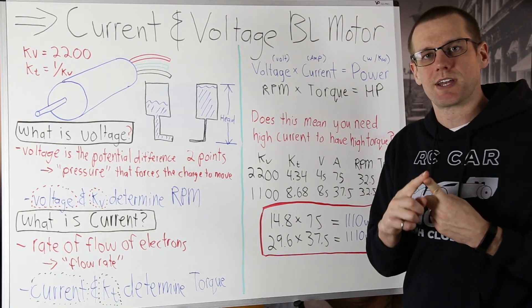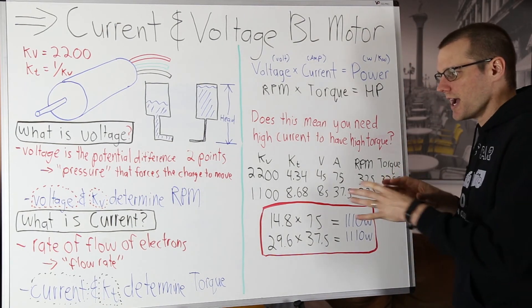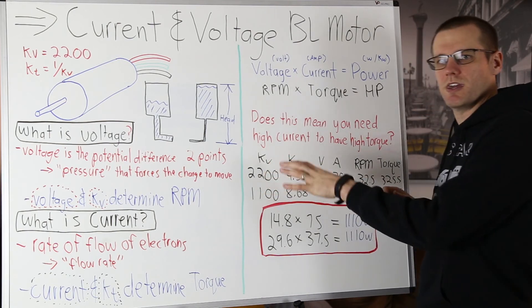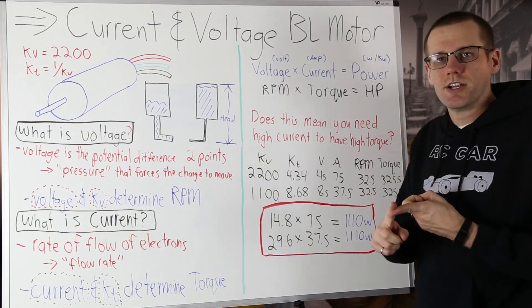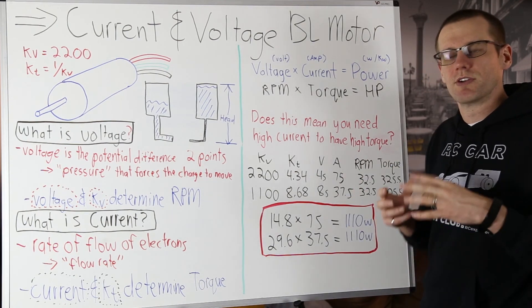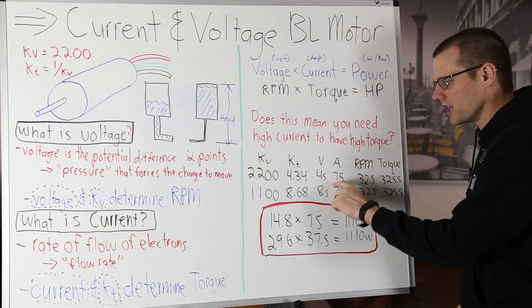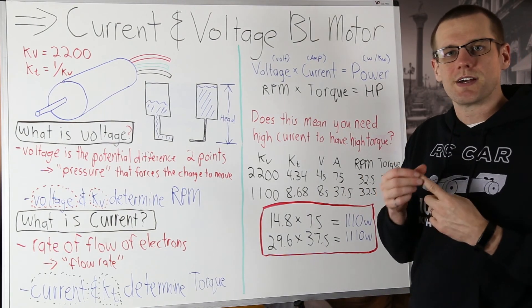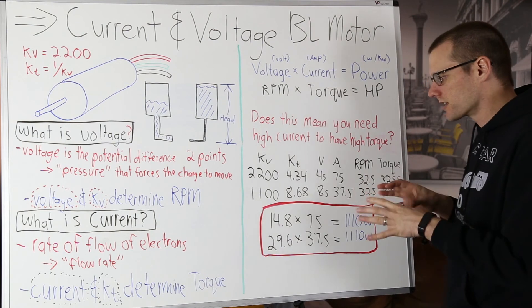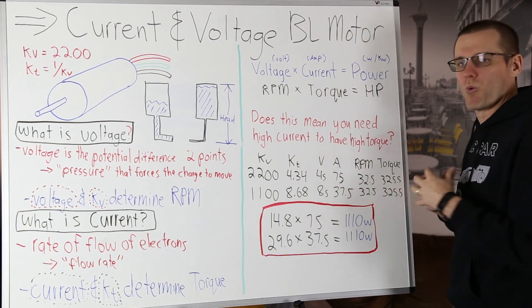What is important about these setups is you really ultimately need to know what voltage you're going to be using for your specific application. Then you can go ahead and select the correct KV for that motor. Once you have all of that selected, then it comes down to the gear ratios or the propeller that you're using for your specific application so that you're able to control the current output.